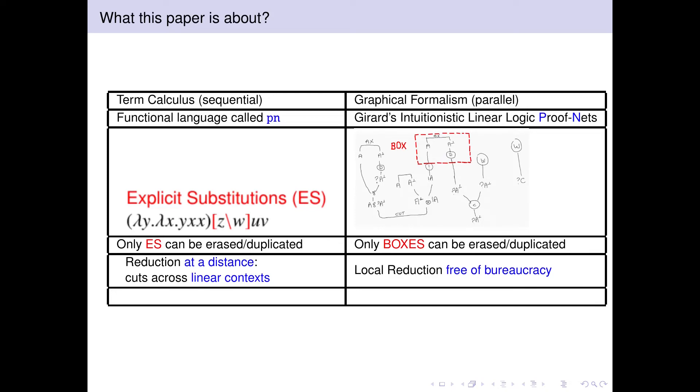In this, the challenge of this paper was to connect in a fine-grained way an evaluation mechanism on a sequential term language with the well-known evaluation mechanism on the graphical formalism of proof nets. This is particularly interesting because the two models are in principle very different.